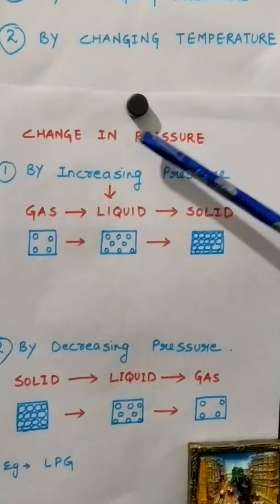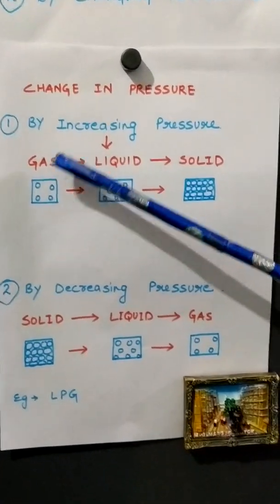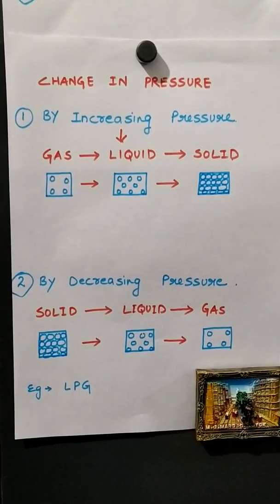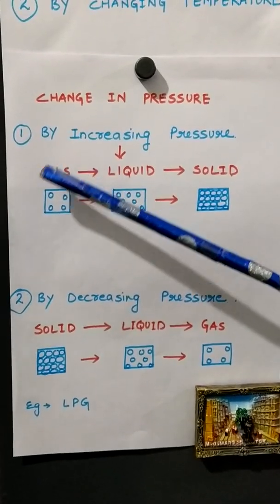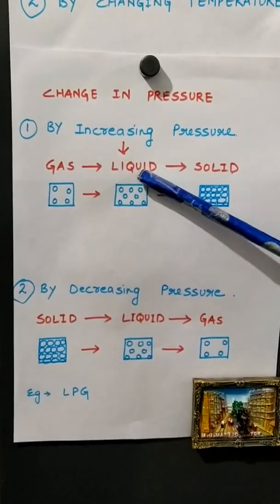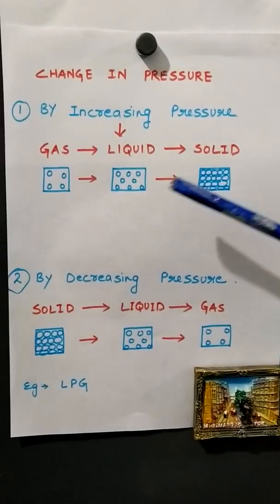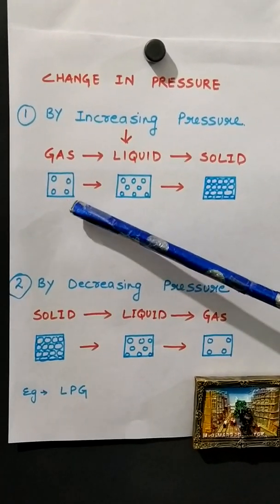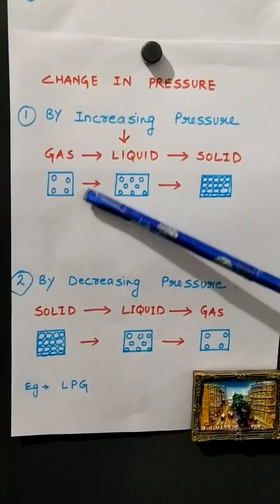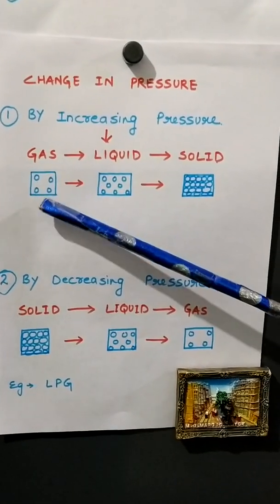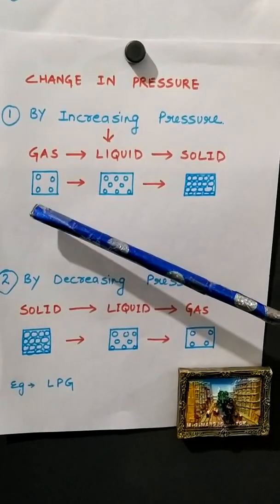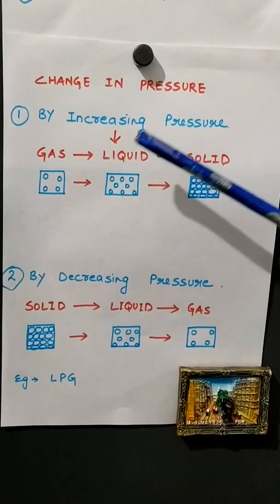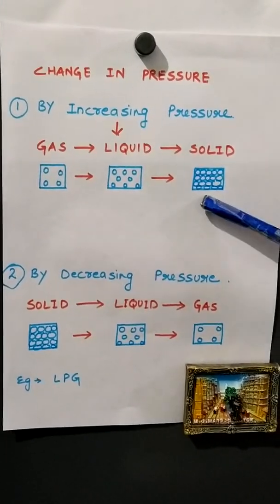The first way is by changing the pressure. By increasing pressure, we can change the state of matter. When we increase the pressure, gas gets converted into liquid and liquid gets converted into solid. This relates to the interparticle space of a particular state of matter. In the gaseous state, the interparticle space is large compared to liquid, and liquid has more interparticle space than solid.